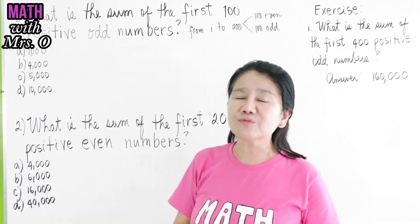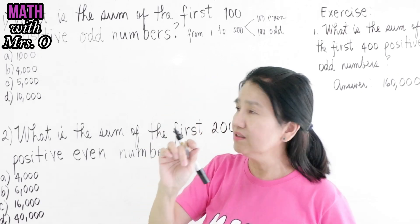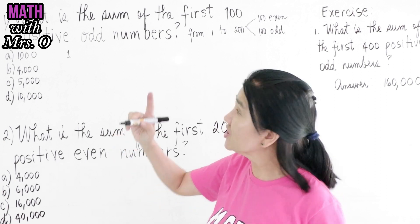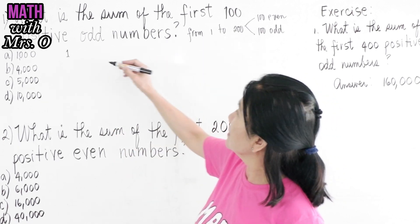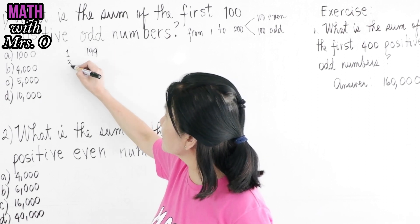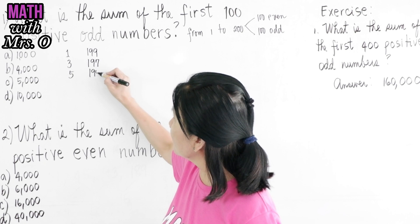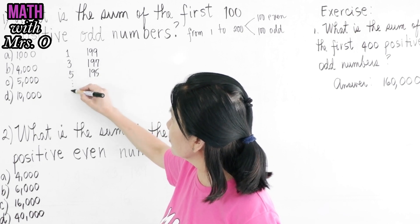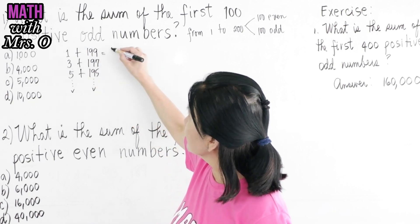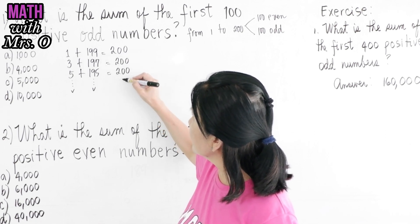Therefore, if we consider numbers from 1 to 200, what is the smallest odd? It is 1. What is the largest odd from 1 to 200? It's 199. The next lower is 3, and this is 197. The next is 5, and 195, and so on and so forth. If you're going to add these pairs, what do you notice? You're getting 200, 200, 200, and so on.